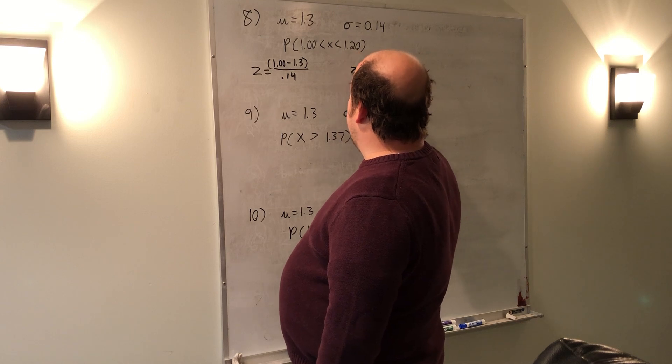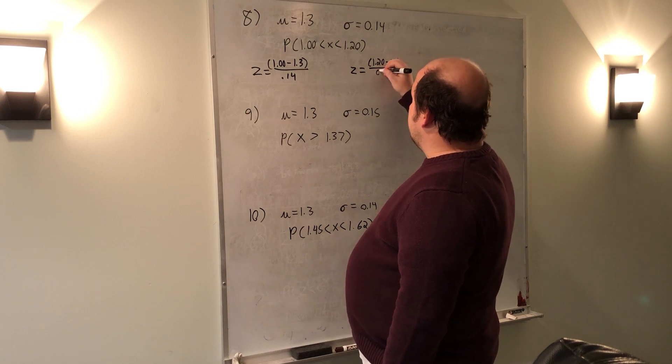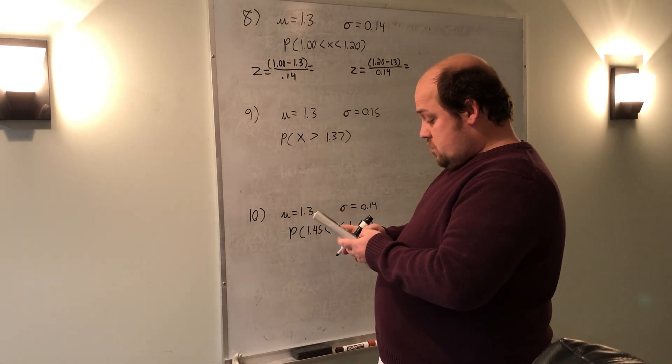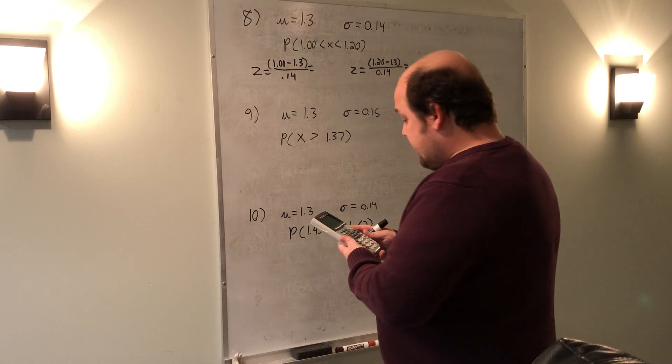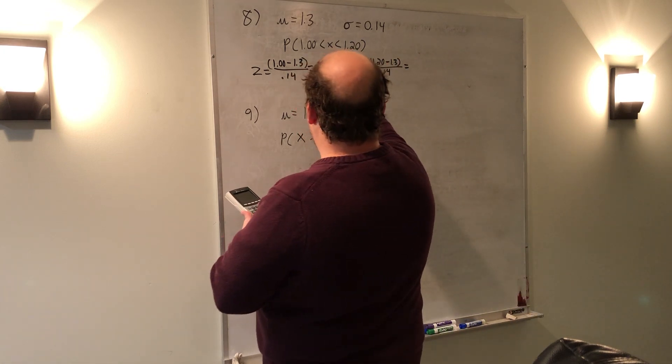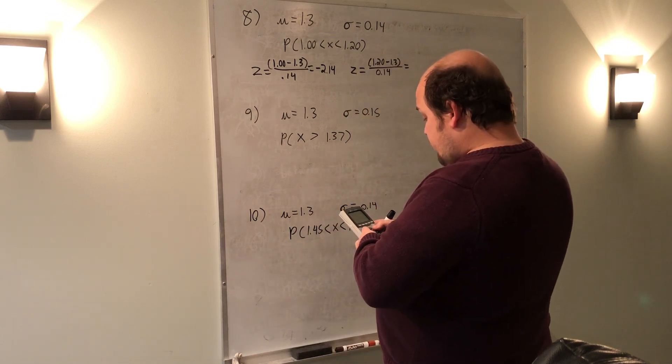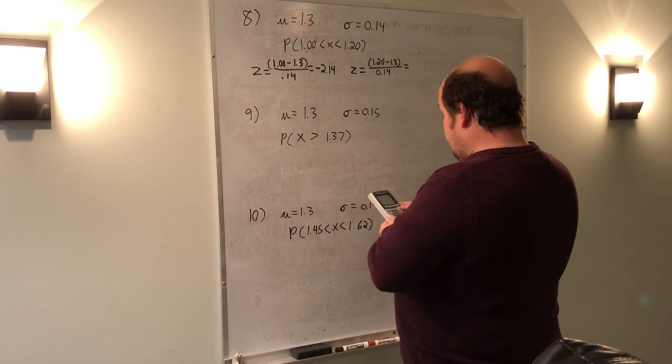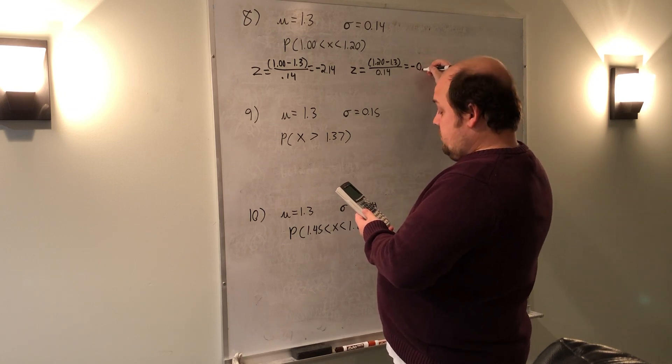For 1.20, I'll be doing z equals 1.20 minus 1.3 over 0.14. So I get out my calculator to try each of these, making sure I'm doing the subtraction on top before the division. When I do 1 minus 1.3 divided by 0.14, my calculator tells me that's a z-score of negative 2.14. When I do the second one, 1.2 minus 1.3 divided by 0.14, that gives me a z-score of negative 0.71.